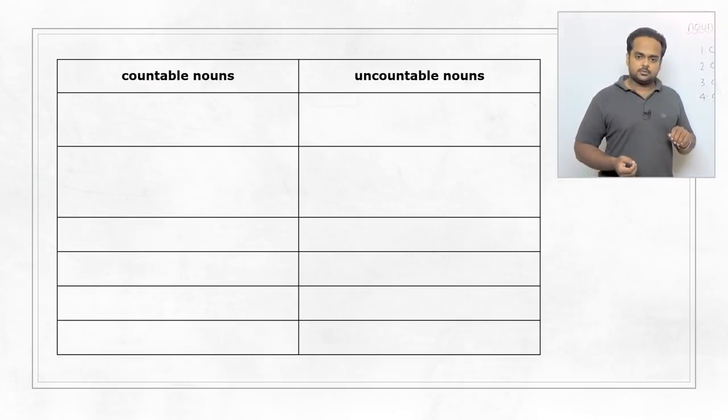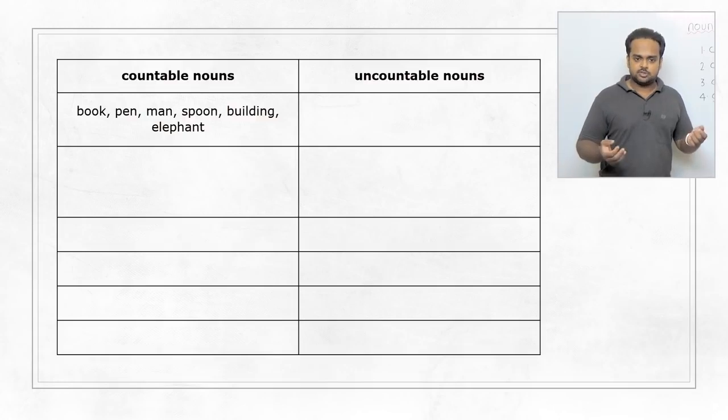Some common countable nouns are book, pen, man, spoon, building, elephant. With all of these, we can use numbers or plurals to talk about them. We can say two books, five pens, three buildings. If there's only one, we can use a or an. I have a book, there's an elephant standing over there.